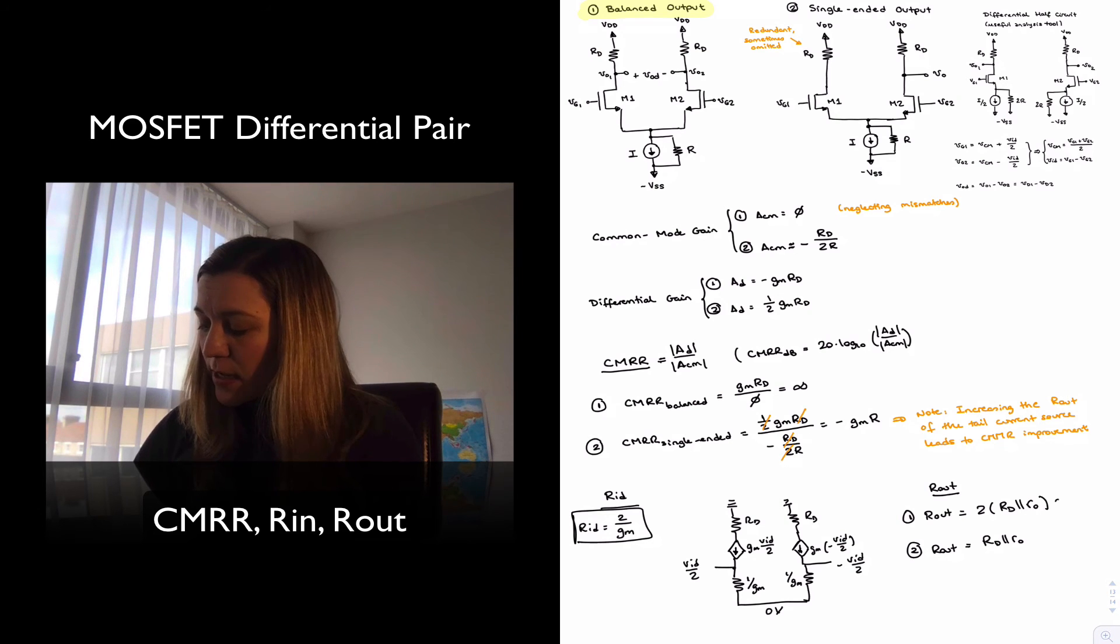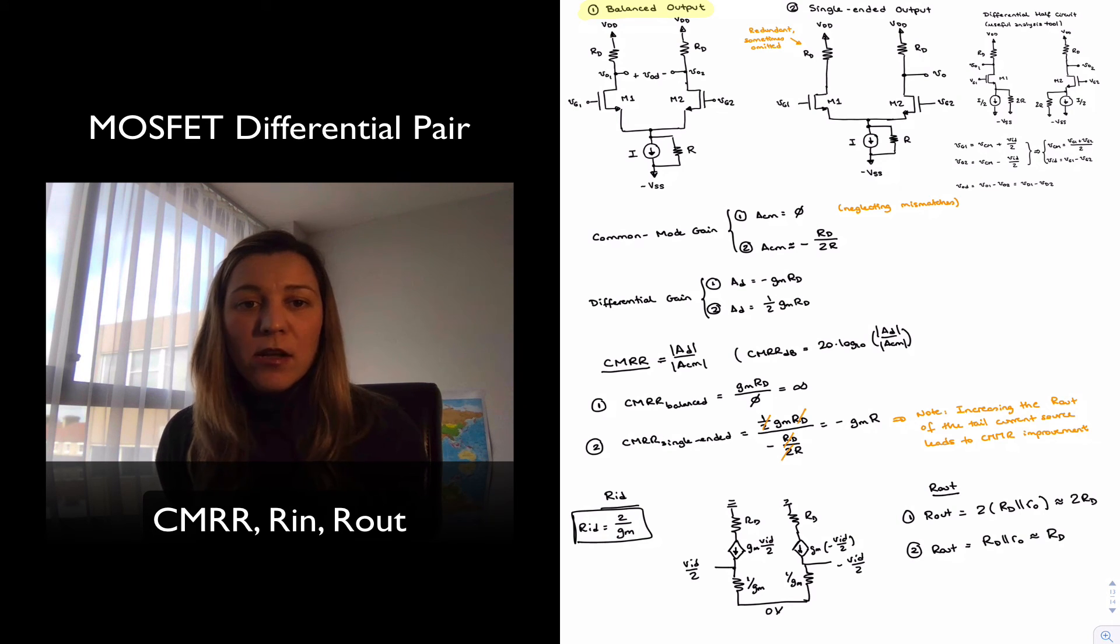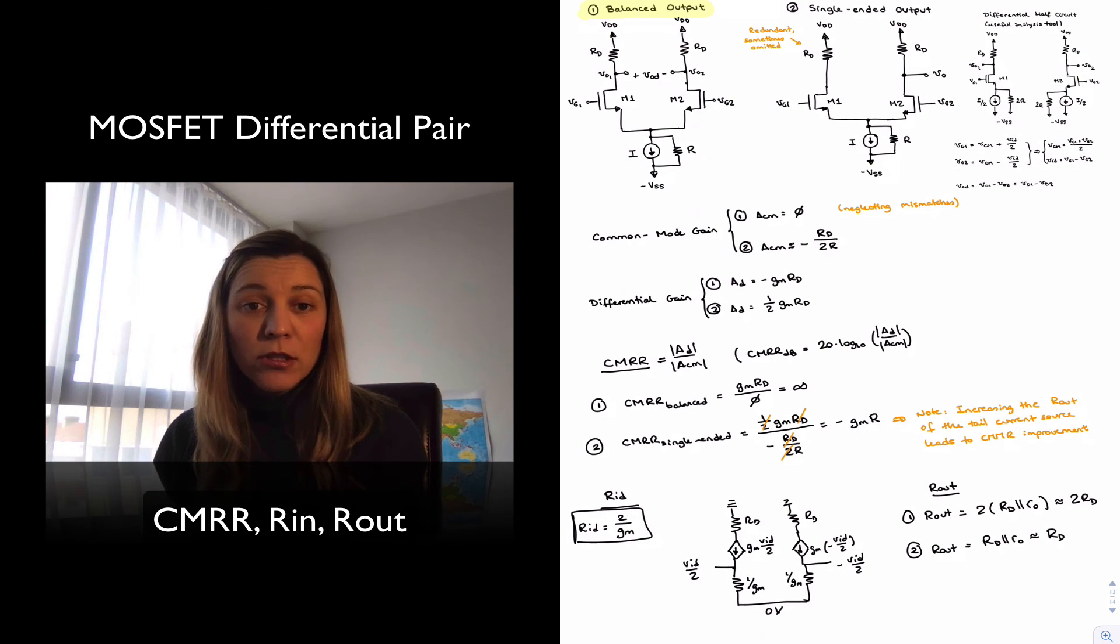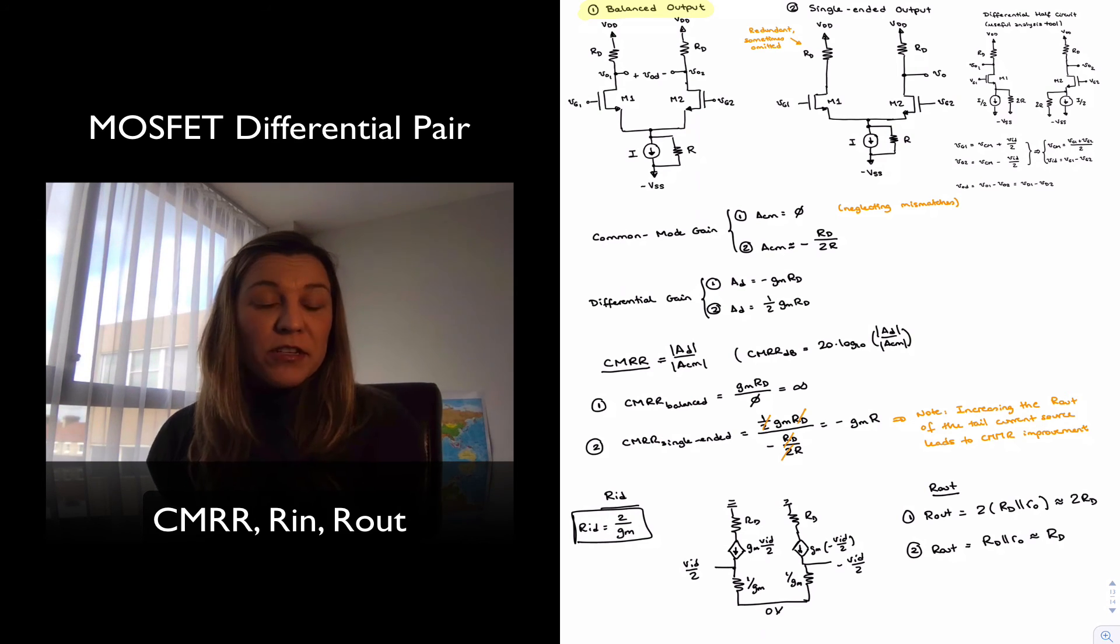Now, one could say this is approximately equal to 2RD and this is approximately equal to RD in most cases. But we will see that when we are using an active load as opposed to a drain resistor, the active load is going to have a resistance which is comparable to little rout. If the transistors are matched, it's going to be equal. And so in those cases, we will want to take into consideration little rout.